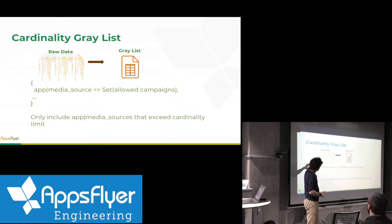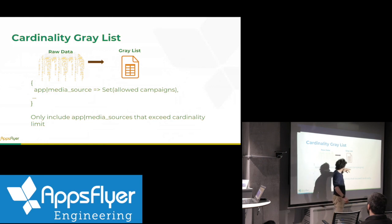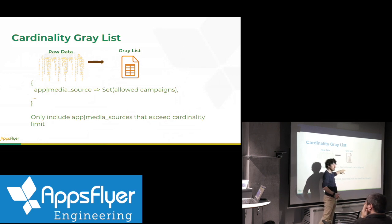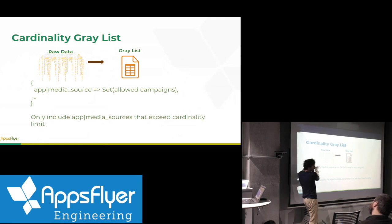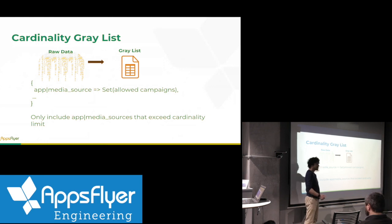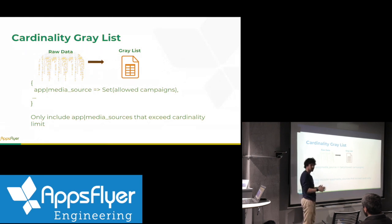The idea is that for every app and media source pair — this is the business dimension we're interested in — they're only allowed to have some number of campaigns. If a particular app and media source has more than that number of campaigns, then we store a set of the allowed campaigns that they can have. You can envision this as a hash map where the keys are the app and media source, and the value is the set of allowed campaigns. What makes this a gray list rather than a white list is that if an app and media source doesn't exceed the limit, we just don't do anything — that's the signal that means everything is okay.